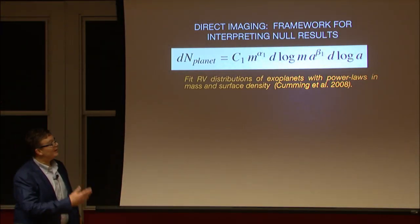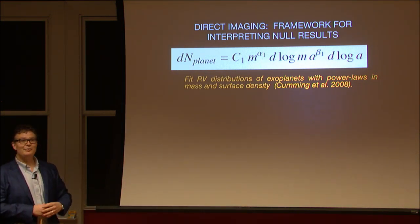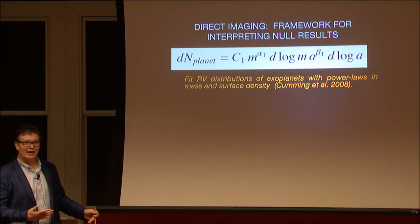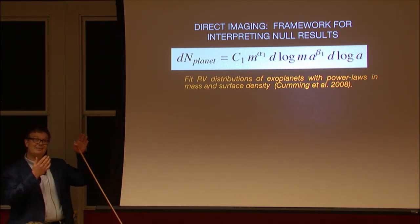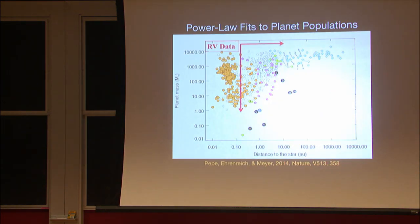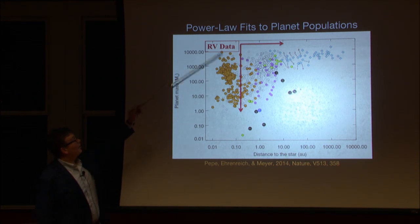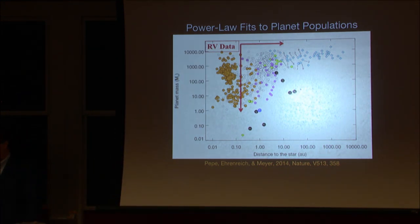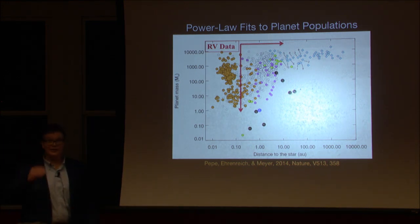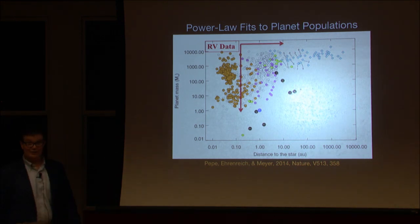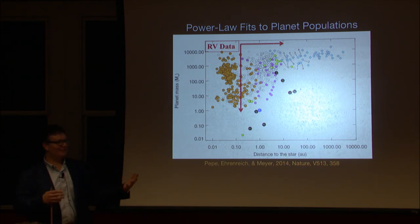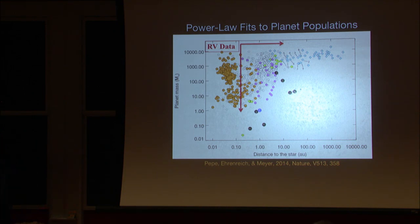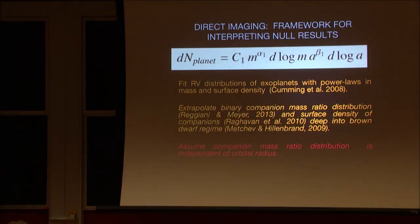Our story begins with Andrew Cumming in 2008, where years of radial velocity surveys had accumulated and nice power law fits were made to the exoplanet populations within two to two and a half AU. The planet distribution functions are rising in surface density in the log, and rising to smaller masses in the log, but even more dramatically in linear units. When we started 10 to 20 years ago with our first adaptive optics surveys in Arizona, we took models based on these distributions and predicted what we would see beyond 30 AU. Our null results were about cutting off those distribution functions at some outer cutoff radius.